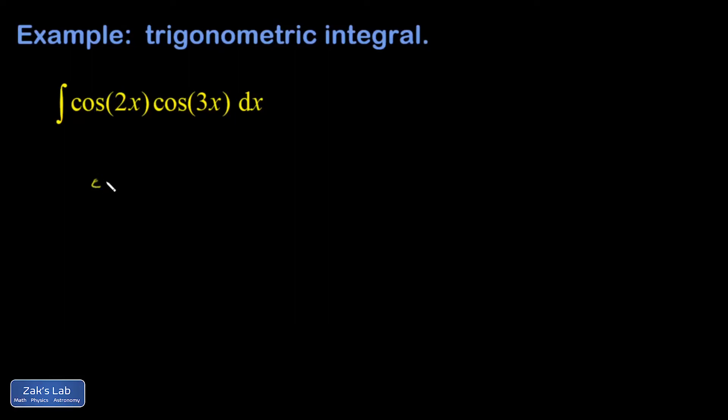How do I make progress on this thing? Cosine 2x cosine 3x is going to be 1/2 times the cosine of the sum of these two angles plus cosine of the difference of the two angles, so 2x minus 3x.